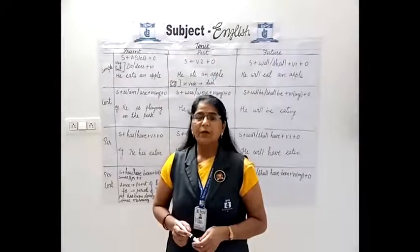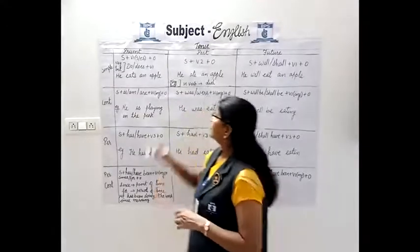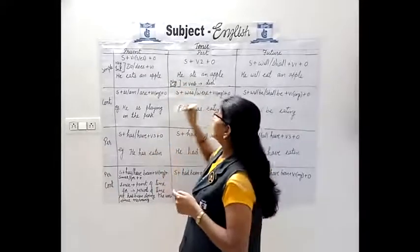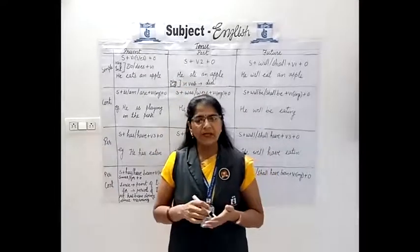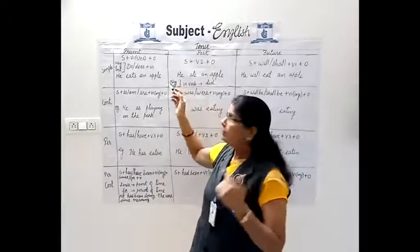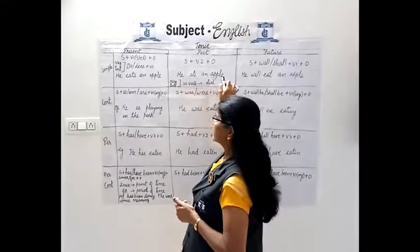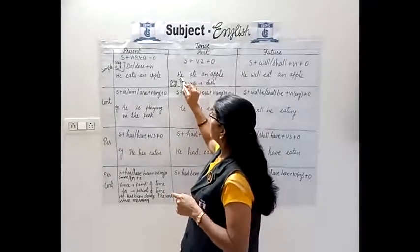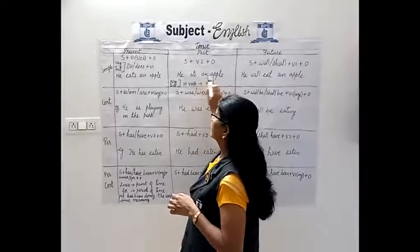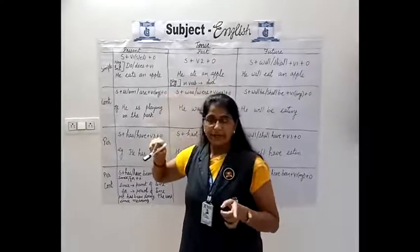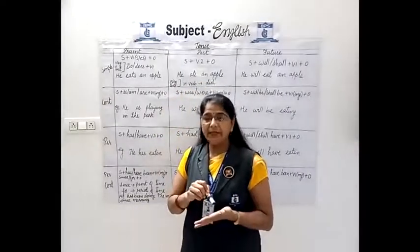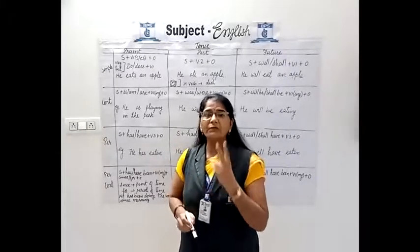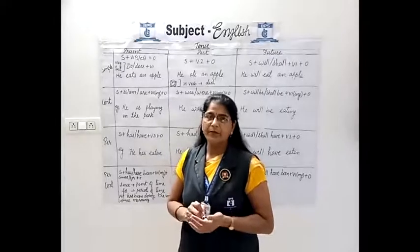In past simple tense, when changing the sentence into negative or interrogative, 'did' is required. For negative: 'He did not eat an apple.' When we use 'did' in negative or interrogative sentences, always use V1 form — not V2 form.